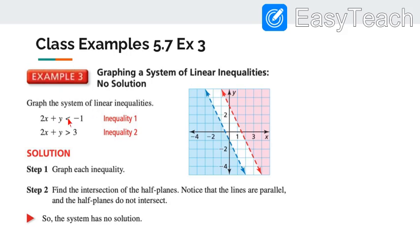Sometimes, you will graph a system of linear inequalities, and you'll get two parallel lines. And sometimes, those lines will be shaded opposite. If they are shaded opposite, like this, so there's a white space in between, then there are no solutions.